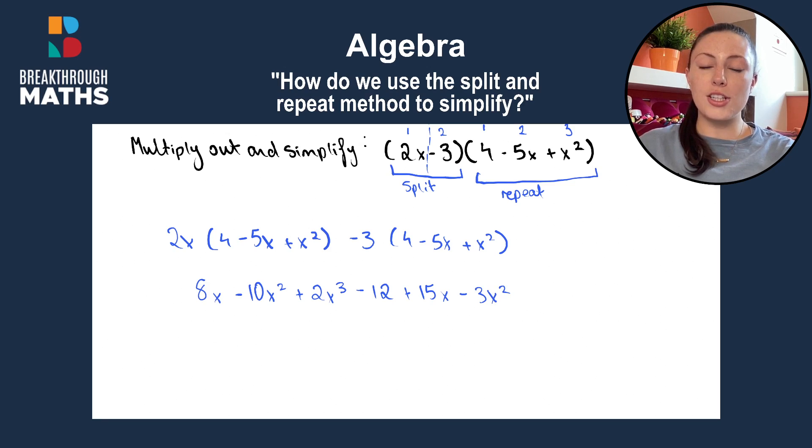And now what we can do is go through each of the terms and add up our like terms. So first of all, x cubed. There's only one of them, so we write that down. 2x cubed. Next, we will look at x squared. So we have minus 10x squared and we also have minus 3x squared. So that gives us minus 13x squared.